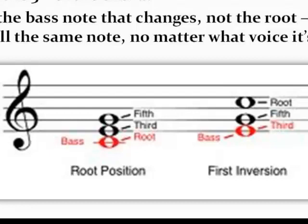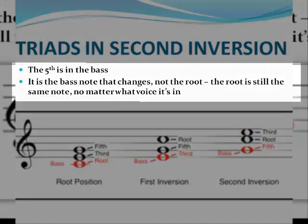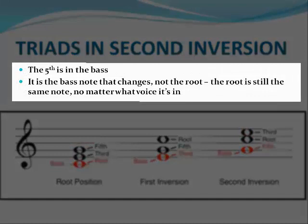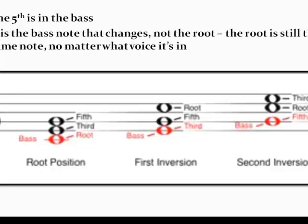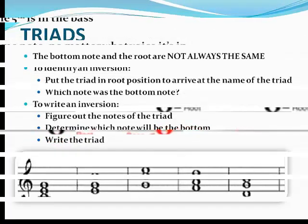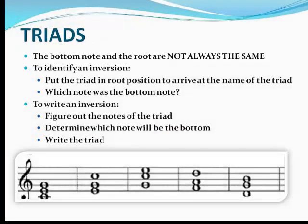This is still a C major triad even though the root is in a different place. In other words, in first inversion, the bass note changes but not the root. Here's what the root position and first inversion triads sound like. In second inversion, the fifth note of the triad is in the bass. This is still a C major triad even though C is not in the bass. The root is still the same no matter what position the chord is in. Here's what the root, first inversion, and second inversion of the C major triad sounds like.